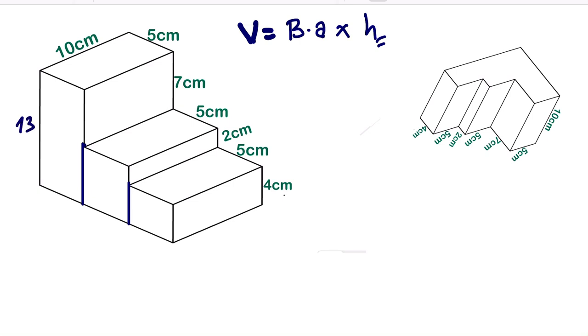So we have 13. Then this other part, we can see we have 5 here. So this is 5. So this other part represents 5 centimeters. So the area here will give us 65 centimeters squared.